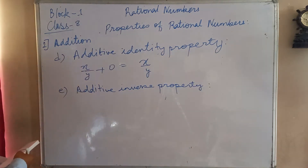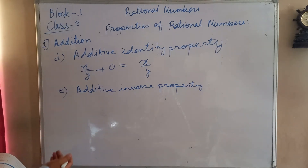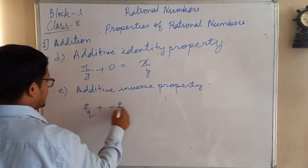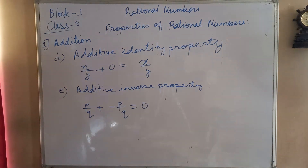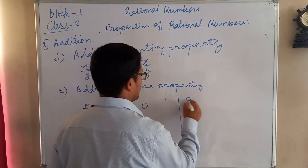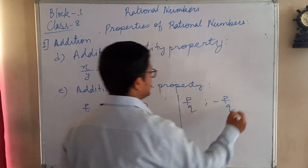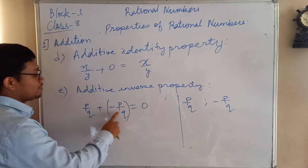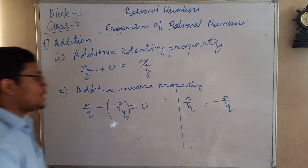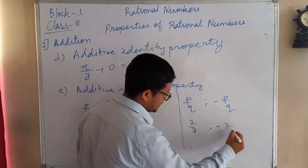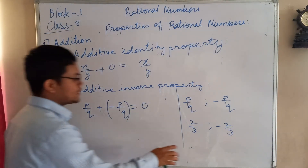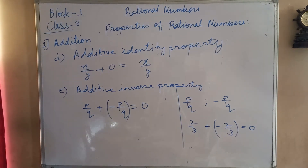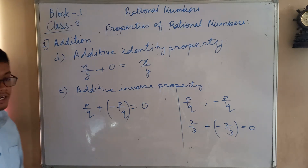The fifth property is the Additive Inverse Property. In this property we change the sign of any number. If there is any rational number p by q and you add it with minus p by q, the result will always be zero. So the additive inverse of p by q is minus p by q. For example, the additive inverse of 2 by 3 is minus 2 by 3, and when you add them together it will always be zero.